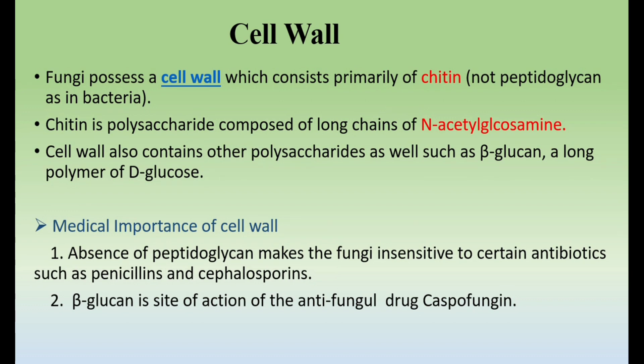Looking at the cell wall in the structure of fungi: fungi have a cell wall, cell membrane, nucleus, and different organelles. The cell wall consists primarily of chitin, not peptidoglycan as in bacteria. Bacteria contain peptidoglycan as their characteristic molecule, while fungi contain chitin. Chitin is a polysaccharide composed of long chains of N-acetylglucosamine. The cell wall also contains other polysaccharides such as beta-glucan, a polymer of D-glucose.